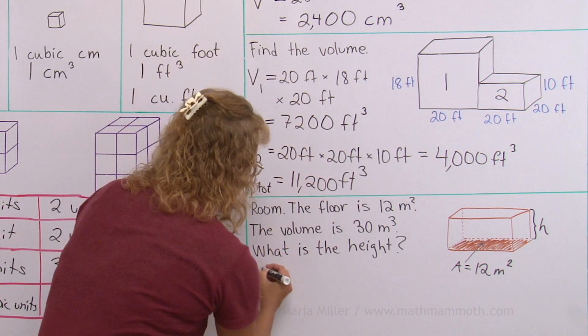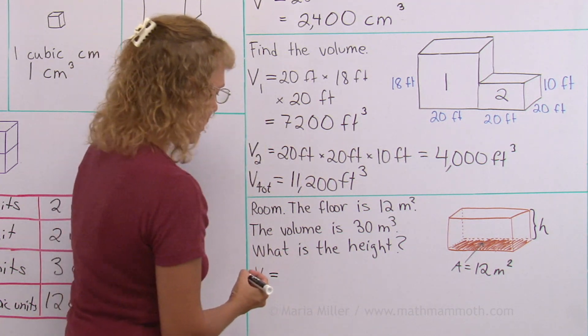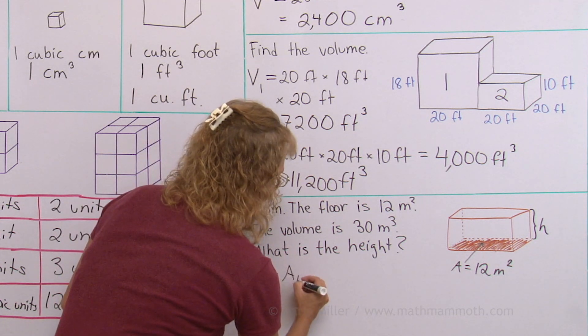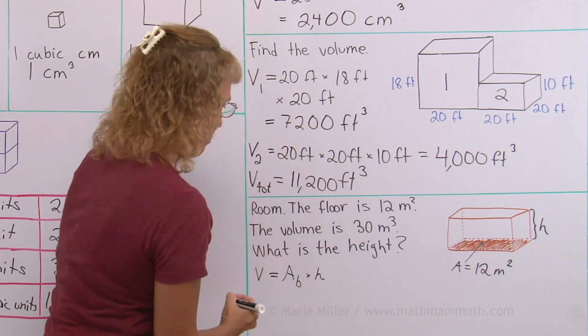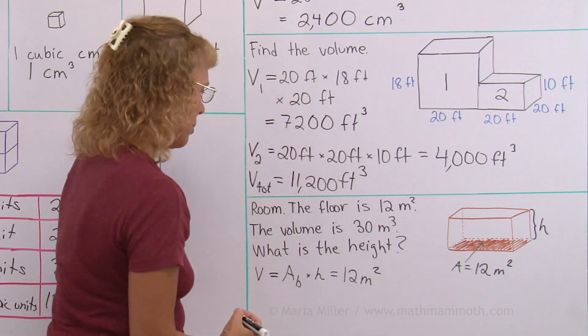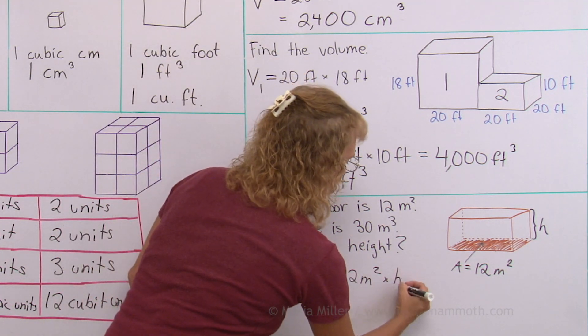we can think of it this way. The volume, in this case, is actually the area of the bottom times the height. The area of the bottom times height,